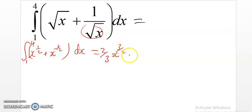We add 1 to the power, this becomes 2 x raised to a half plus some constant c. Of course, we're evaluating this from a equals 1 and b equals 4.